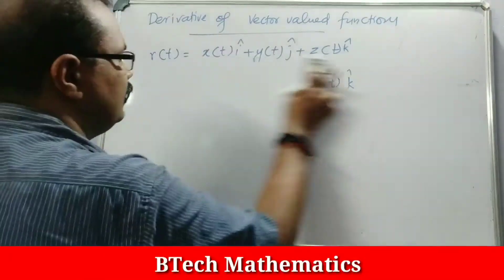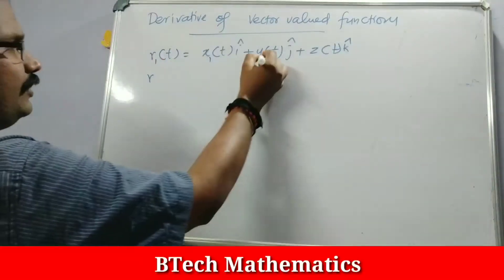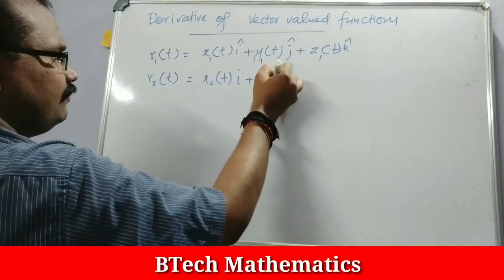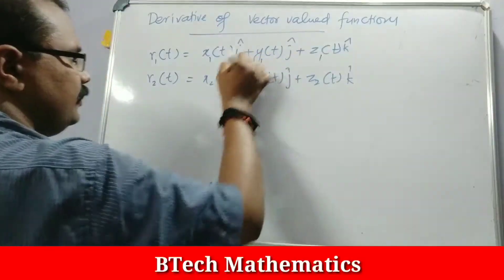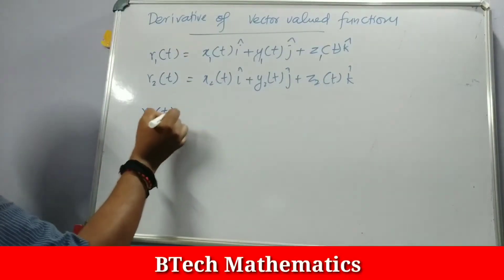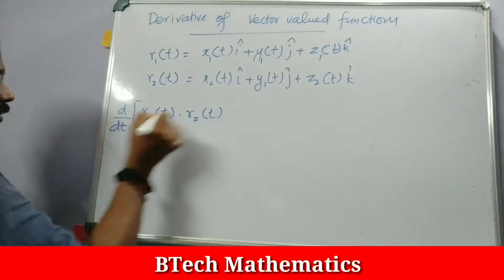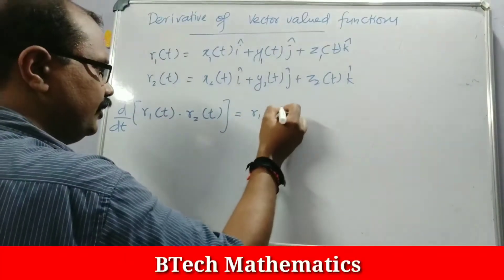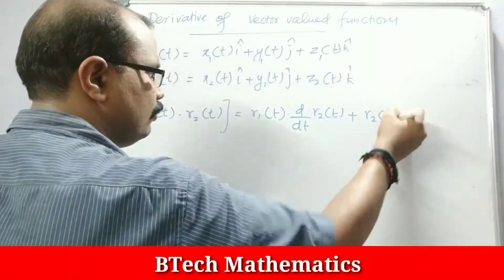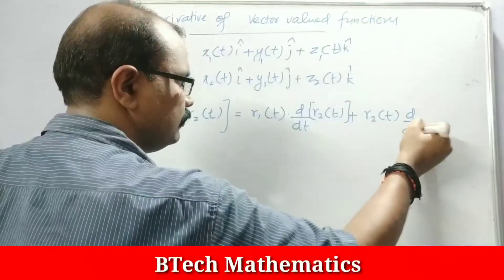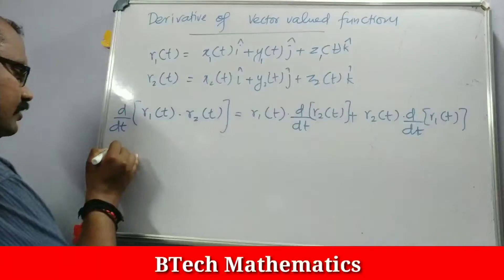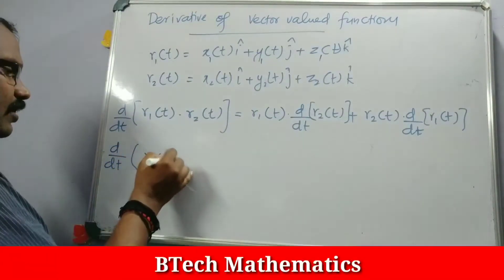Suppose we have two vector valued functions R1 of T with components X1, Y1, Z1 and R2 of T equal to X2 of T i plus Y2 of T j plus Z2 of T k. The dot product derivative follows the product rule: d/dt of R1 dot R2 equals R1 of T dot d/dt of R2 of T, plus R2 of T dot d/dt of R1 of T.